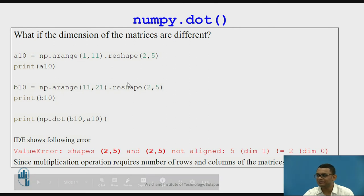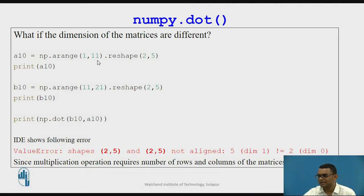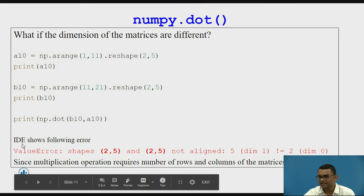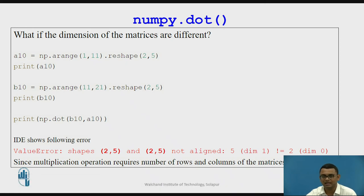Now let us see what happens if the dimensions of the matrices are different. Passing two matrices A10 and B10 both having shape 2 by 5, the IDE gives an error that shapes 2,5 and 2,5 are not aligned. The reason is that matrix multiplication requires the number of columns of the first matrix and the number of rows of the second matrix to be equal for the dot operation to work correctly.